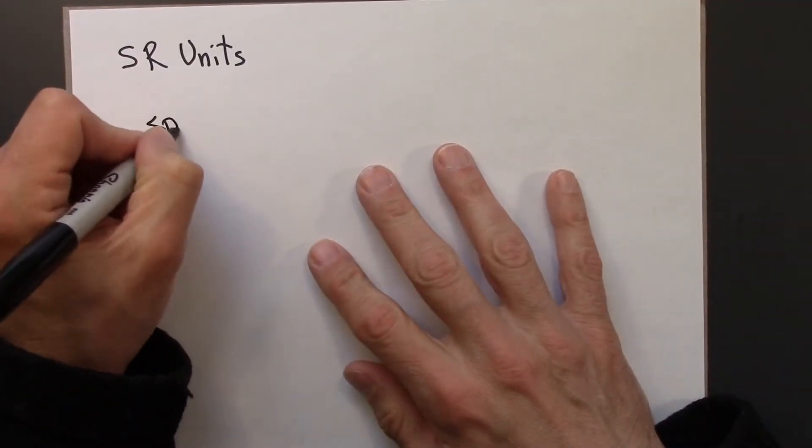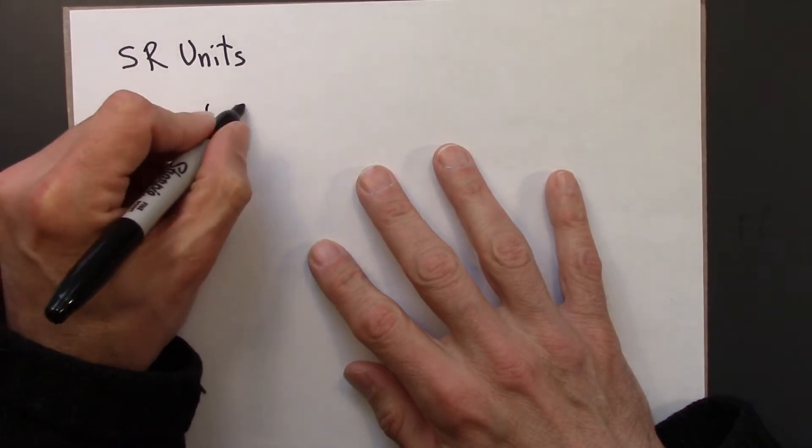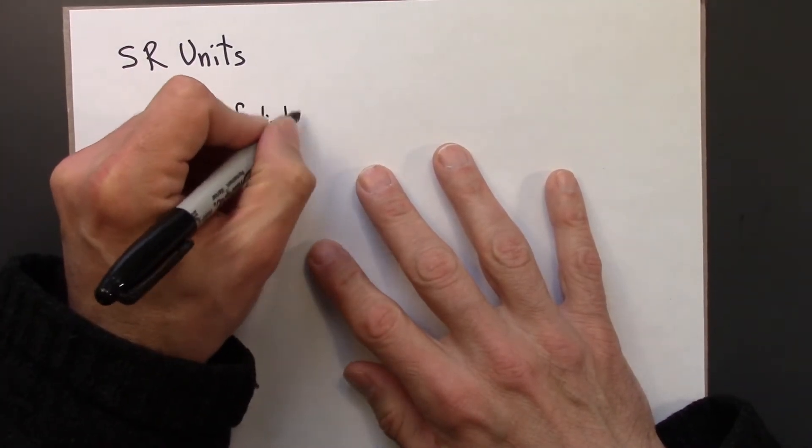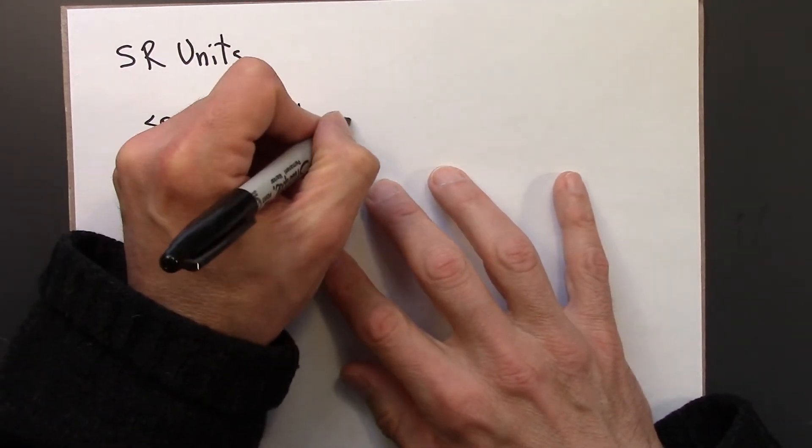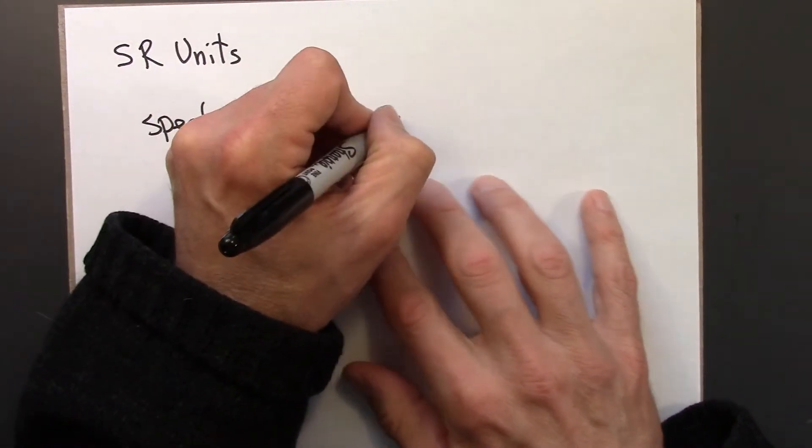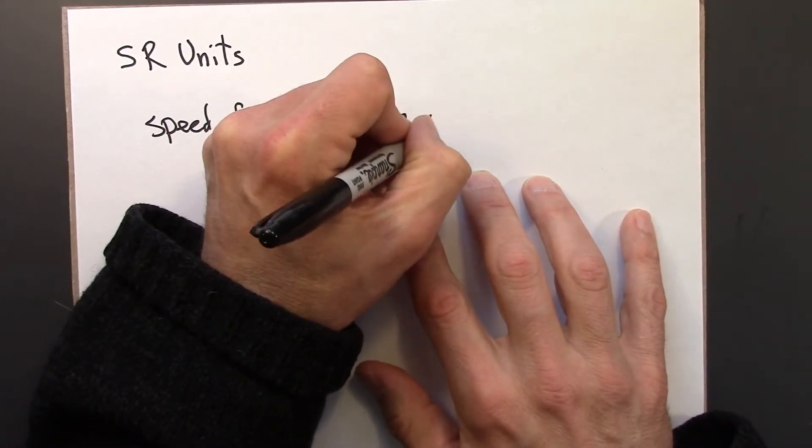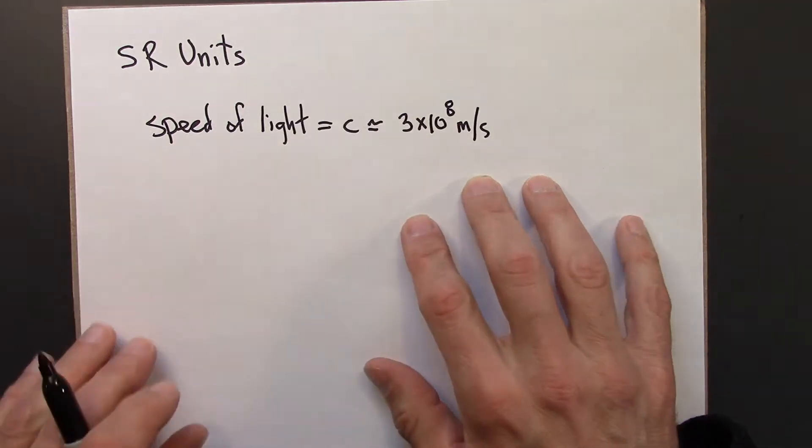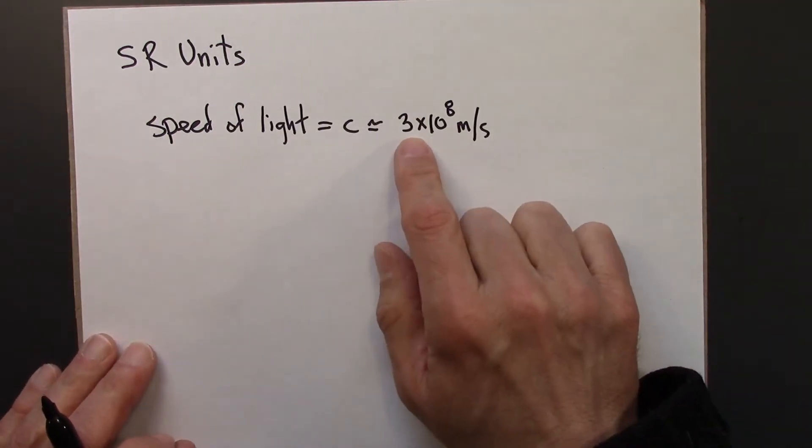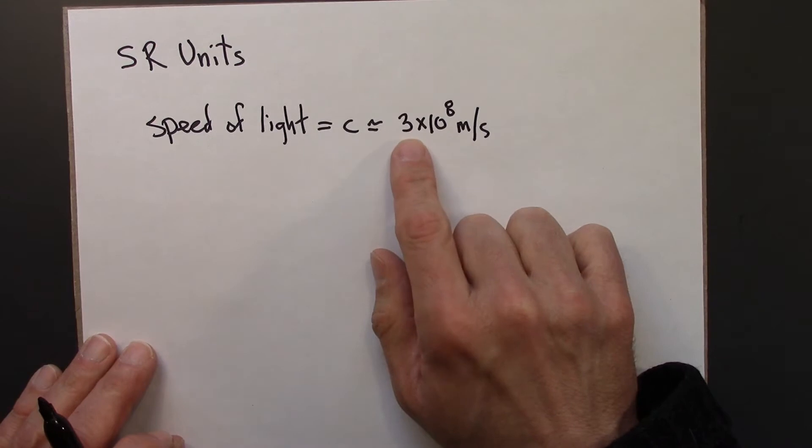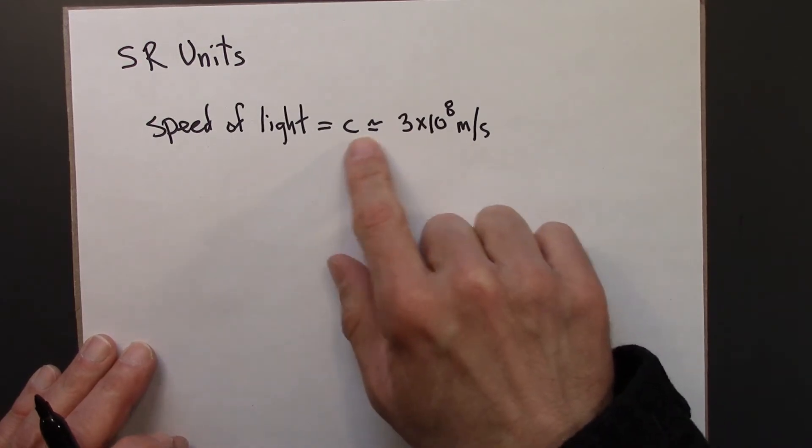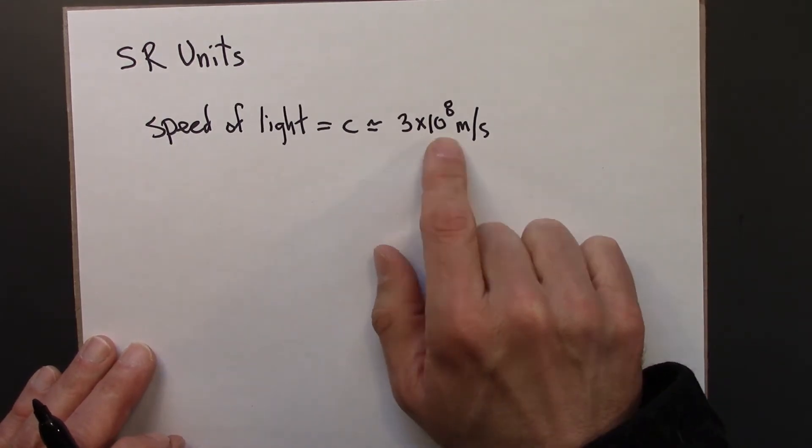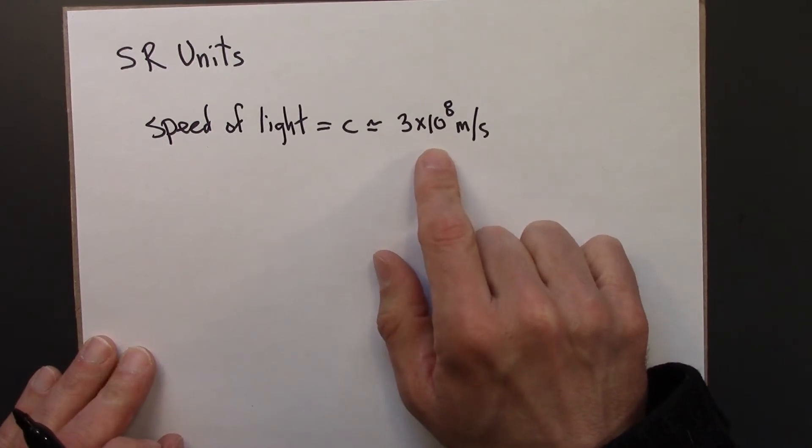So the speed of light, denoted C, is right around 3 times 10 to the 8 meters per second. This isn't exact, it's more like 2.9976 or something. But we'll almost always approximate it as 3 times 10 to the 8th. So that's 300 million meters every second. Super, super fast.